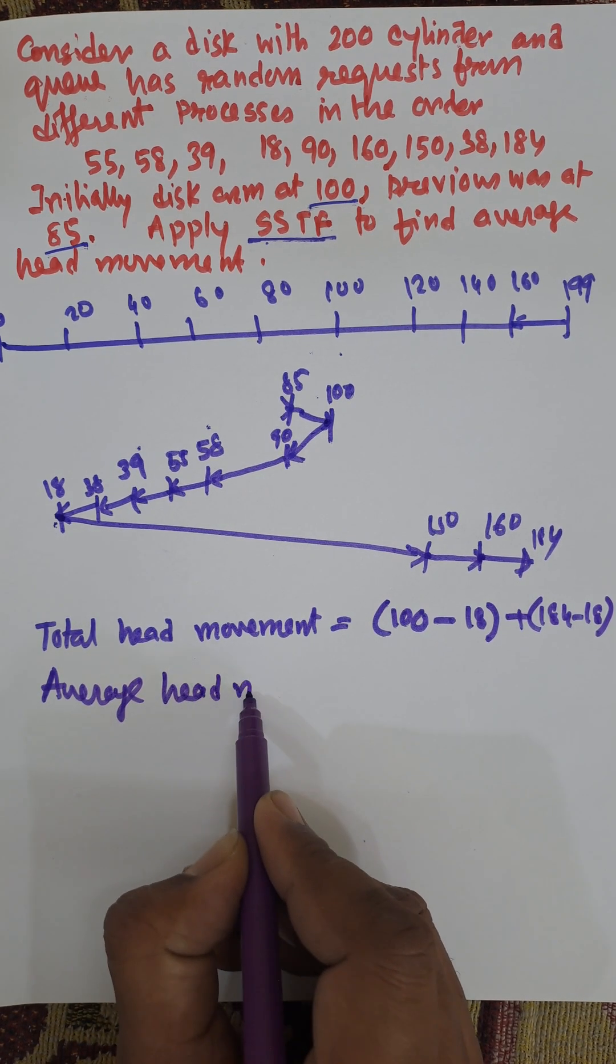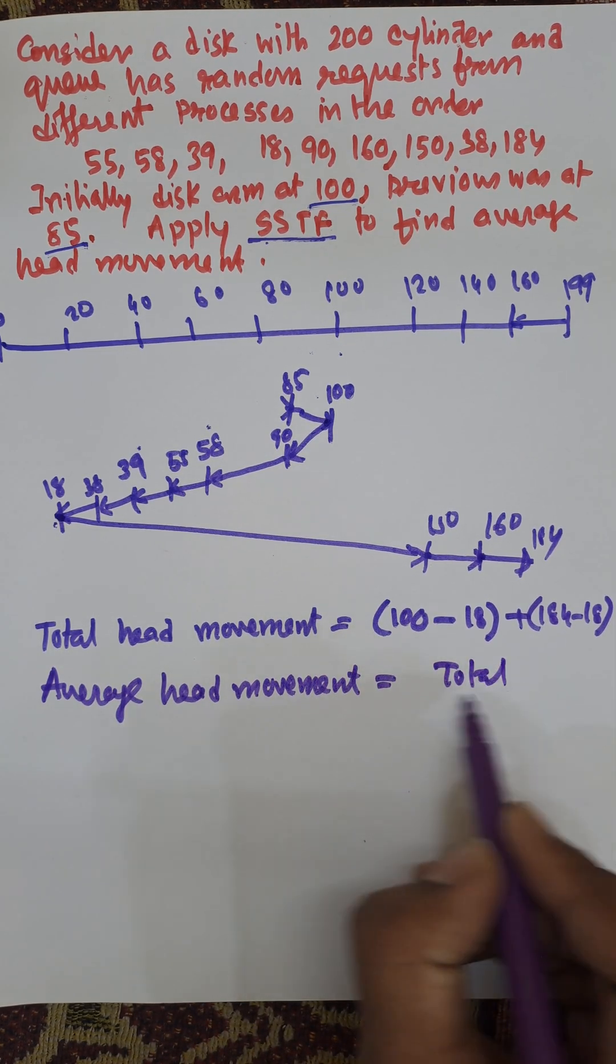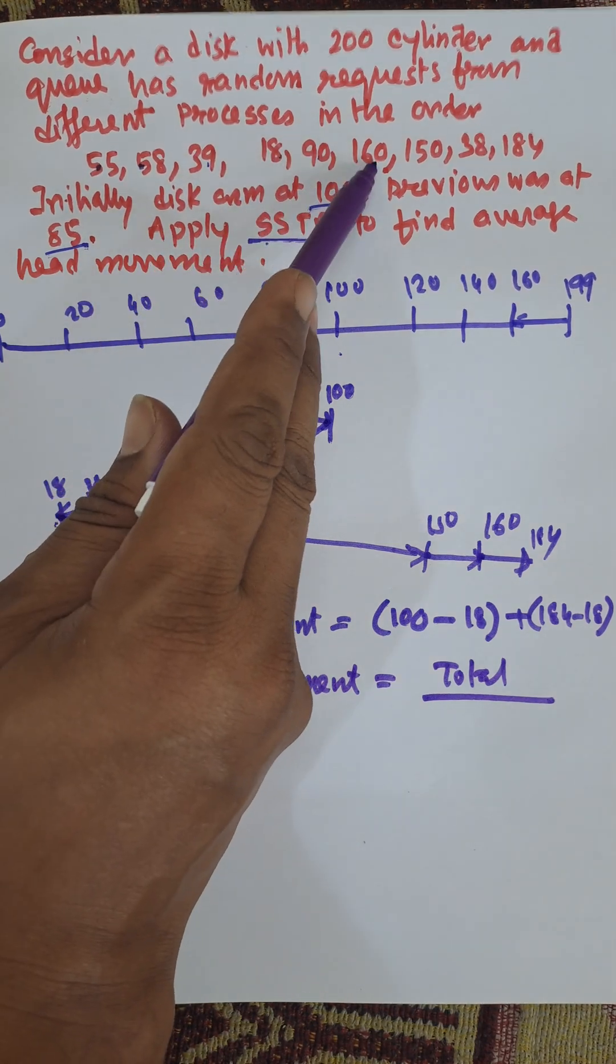Head movement equals 73+166. Average head movement equals total divided by number of disk requests, that is 1, 2, 3, 4, 5, 6, 7, 8, 9 requests.